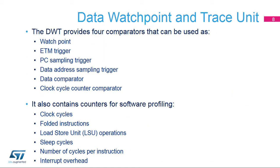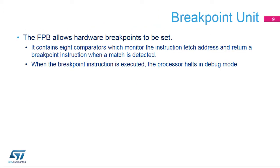A data watchpoint, or DWT, comparator compares one of the following with the value held in its DWT comp register: a data address, an instruction address, a data value, or the cycle count value (for comparator 0 only). For address matching, the comparator can use a mask, so it can match a range of addresses. On a successful match, the comparator generates one or more DWT data trace packets containing the address of the instruction that caused a data access, an address offset (bits 15 to 0 of the data access address), or the matched data value. It can also generate a watchpoint debug event on either the PC value or the access data address, or a CMP match N event that signals the match outside the DWT unit.